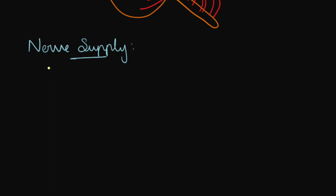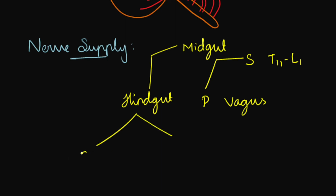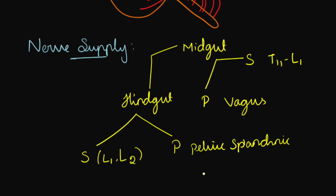The nerve supply of the large intestine has two embryologically different origins: midgut and hindgut. For the midgut — sympathetic supply is through T11 to L1, and parasympathetic is through the vagus nerve. For the hindgut — sympathetic supply is through the lumbar sympathetic chain (L1 and L2), and parasympathetic is through the pelvic splanchnic nerve, also called nervus erigens.